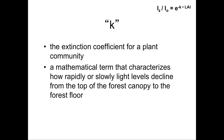K is the extinction coefficient for the plant community. It characterizes how rapidly or slowly light levels decline as you move from the top of the forest canopy to the forest floor — essentially, does light penetrate more deeply into the forest or less deeply?